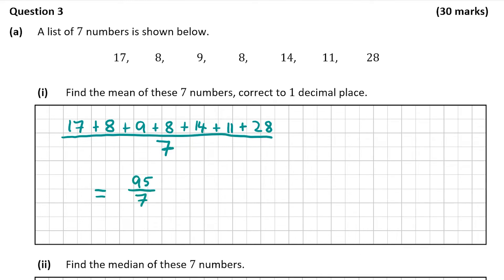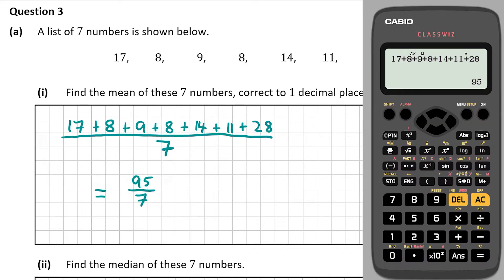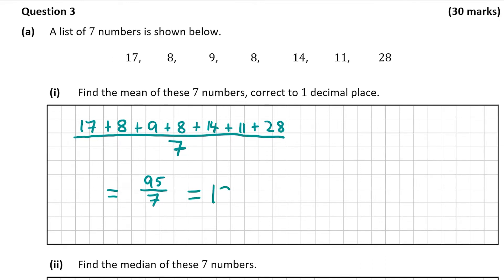So that gives us 95 over 7. It wanted the answer correct to one decimal place, so let's change this to a decimal. We can do that by typing in 95 over 7, clicking equals, and then clicking this button here that has S to D written on it. And that gives us 13.571428. So to one decimal place, it will be 13.6, as the 7 will round the 5 up to 6. So our answer is 13.6.